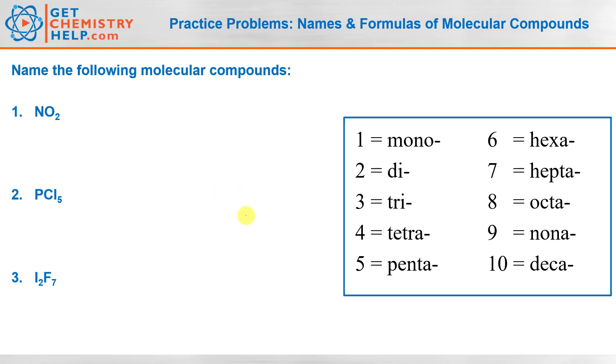Let's go ahead and practice naming NO2. First we want to name the first nonmetal, so N is nitrogen, and there's only one nitrogen. You might recall from our lesson video that you don't include mono on the first nonmetal, only if the second nonmetal has only one. Then we have oxygen, and the name of the second element always has the ending change to -ide, so oxygen becomes oxide. We have two oxygens, so we use the prefix di. The name is nitrogen dioxide.